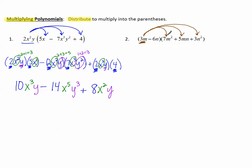So first, 3m times 7m². Like this. 3m times 7m². And then 3m times 5mn. We're adding that term. 3m times 5mn. And then the next term added again. 3m times 3n².